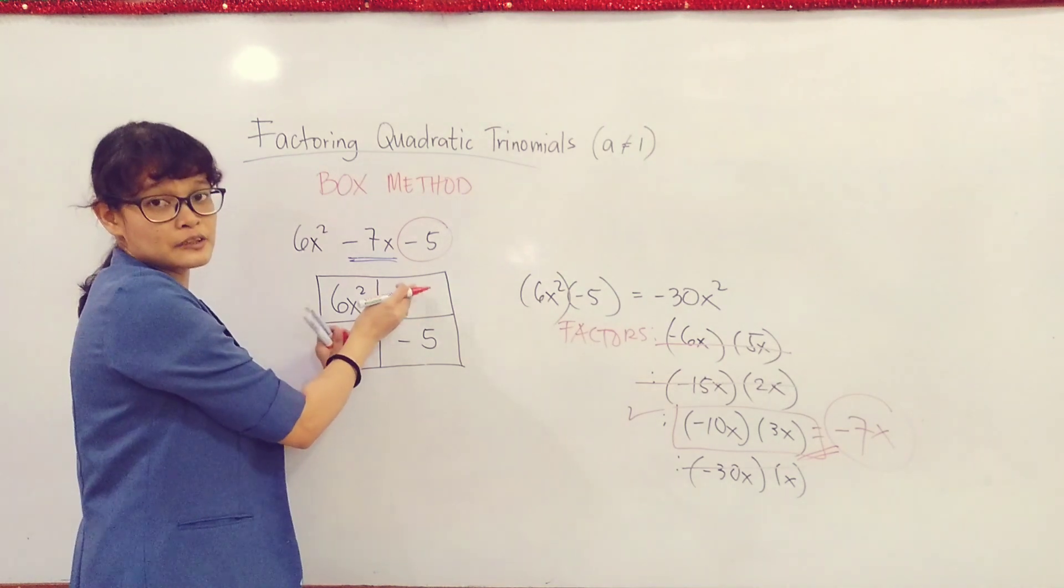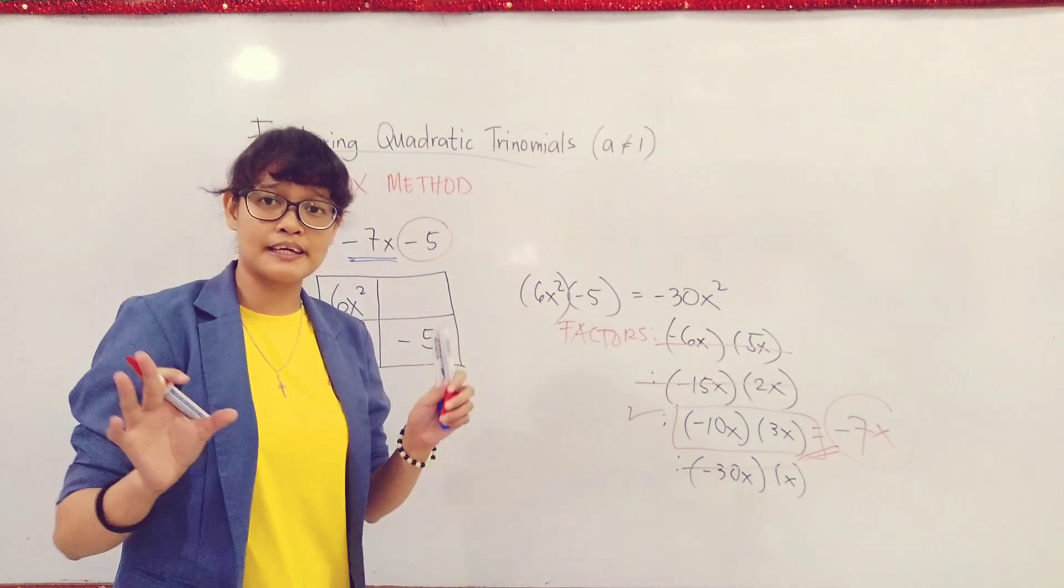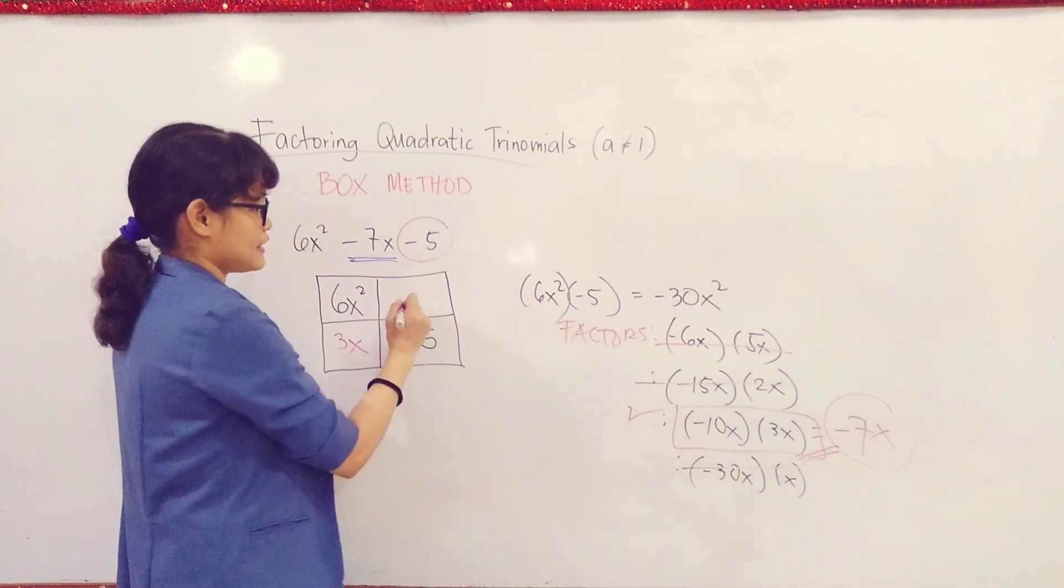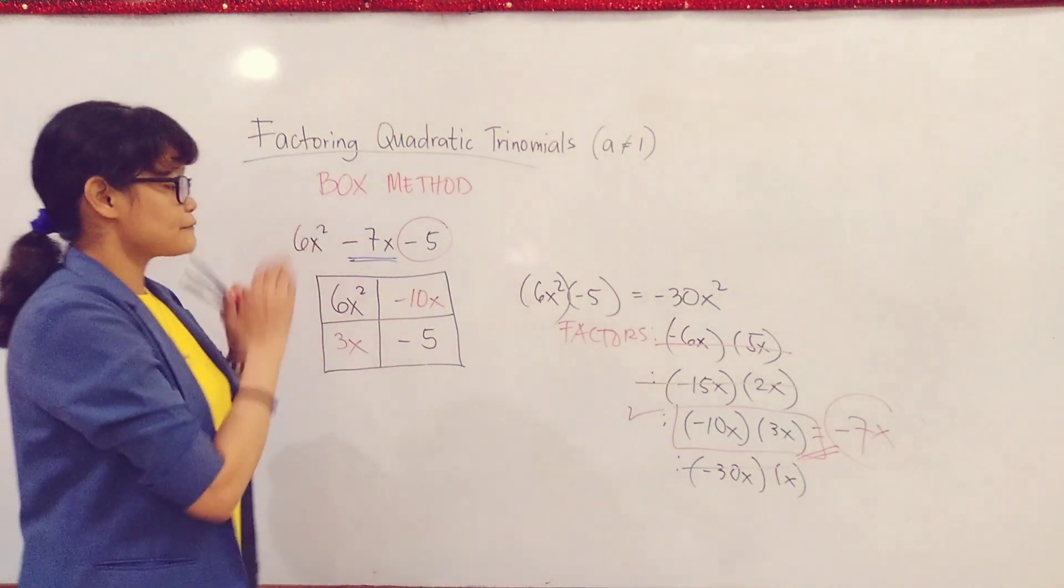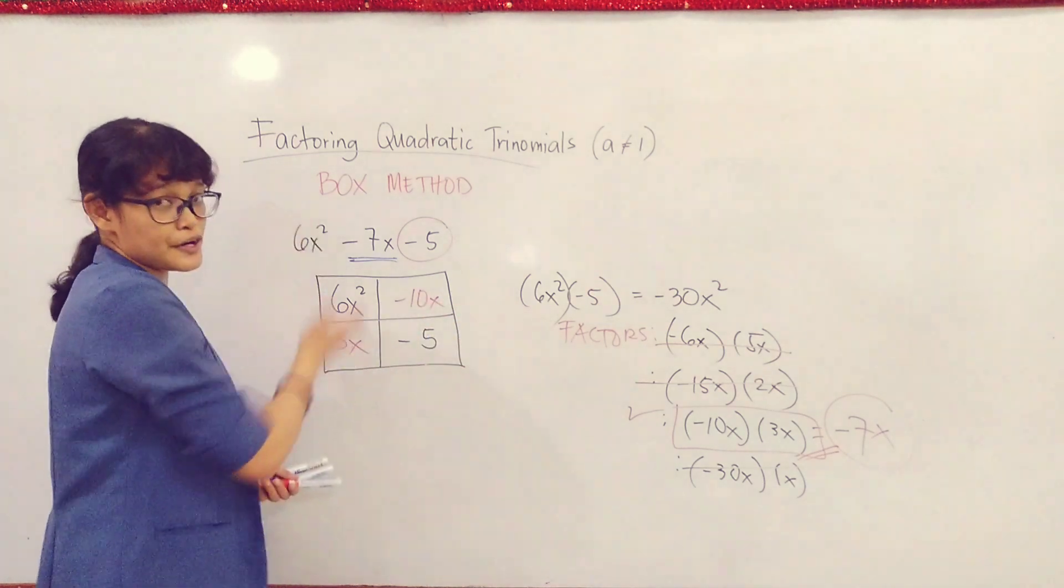Next, let's place them in the grid. Again, the order doesn't matter. Wherever you place them, the answer will be the same. So let's have 3x and -10x. So our final step is to get the GCF per row and per column.